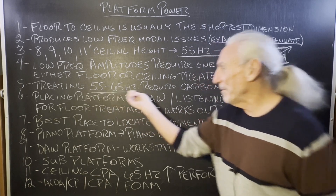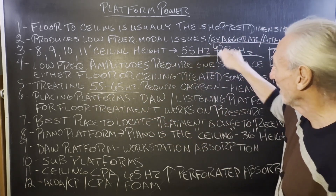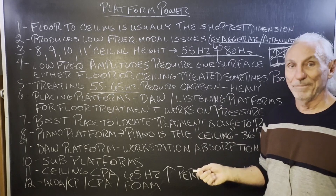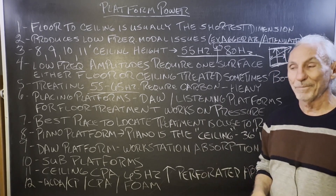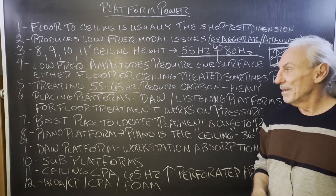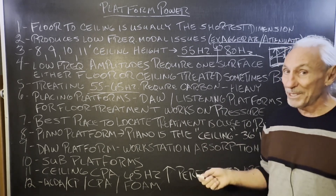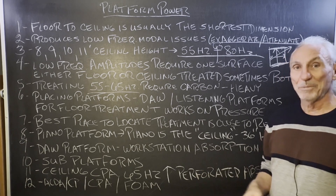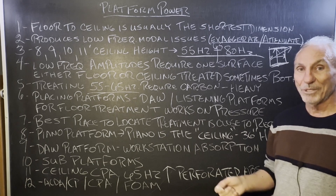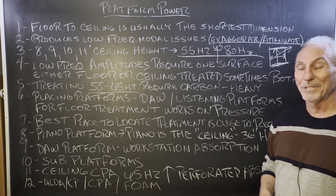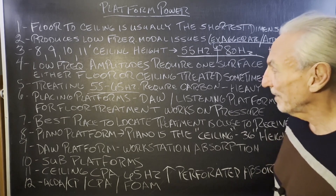To get to that 55 to 65 cycle range, we have to use carbon. Foam won't do it. Perforated absorption won't do it — that's our other technology and it's been around for years, but it won't do it. So we have to use our carbon to get that. Carbon is heavy and can't really be suspended from ceilings. People do it sometimes, but we don't suggest it because the units are 175 pounds each, and if one of those falls on you, you're dead. So you want to be very, very careful.